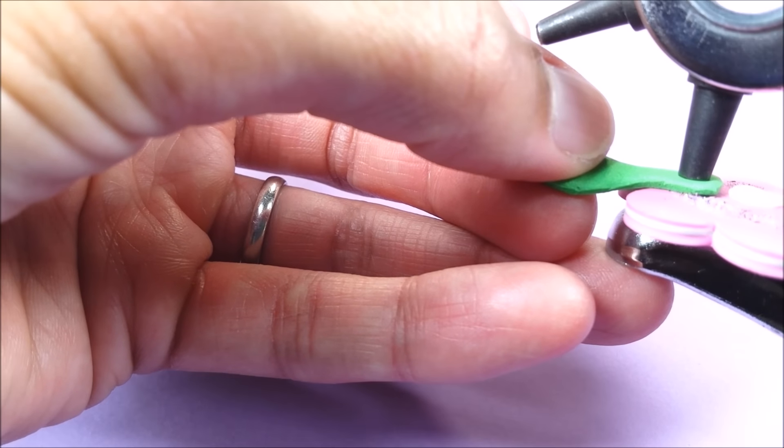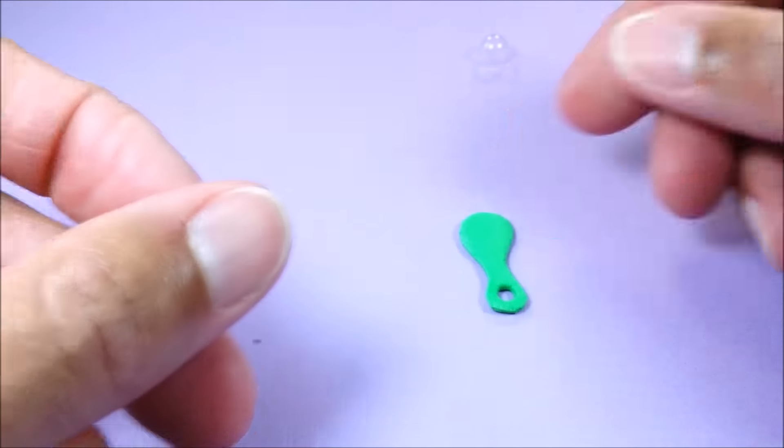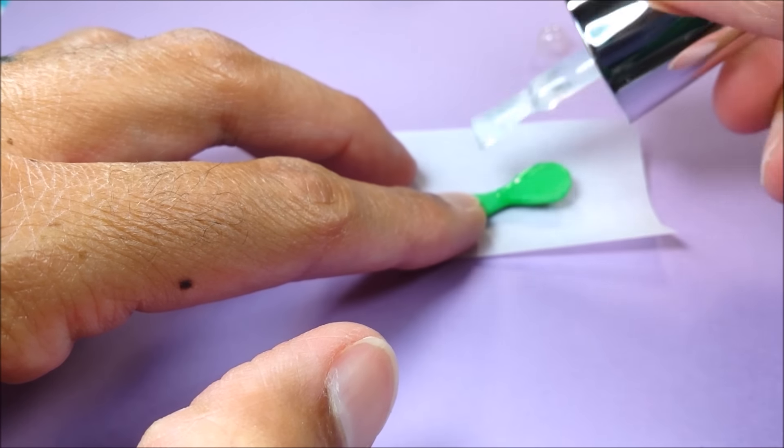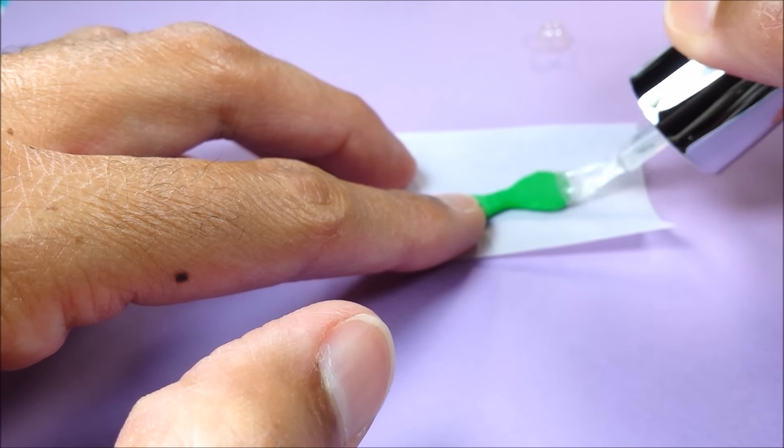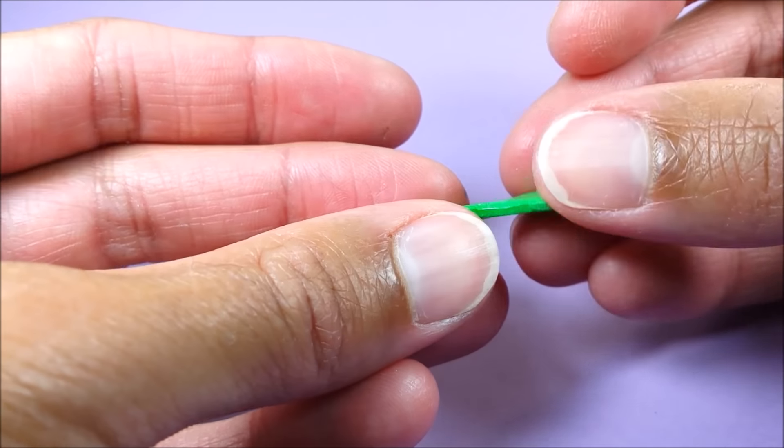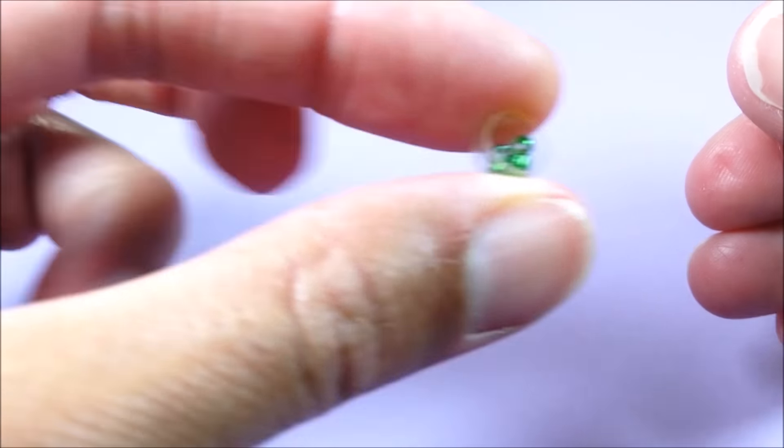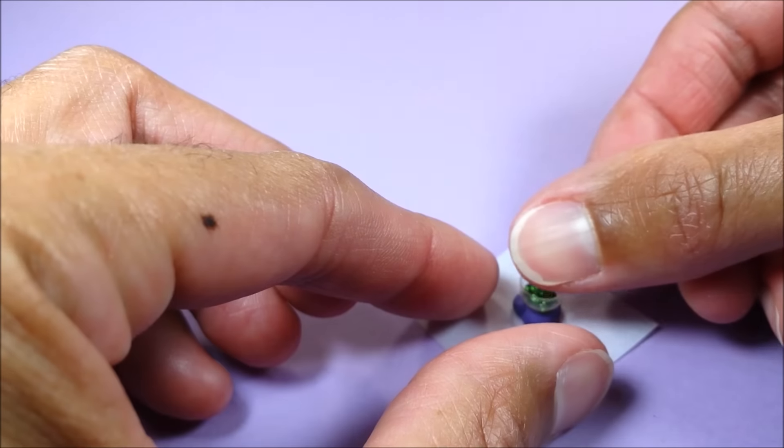Then I take the smaller setting on my hole punch and I use clear nail polish just to stiffen it up and give it a nice shine. I do that on all sides. When dry, place my beads inside my little capsule.